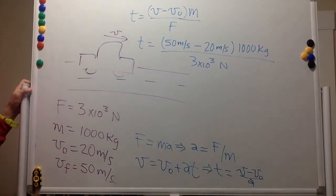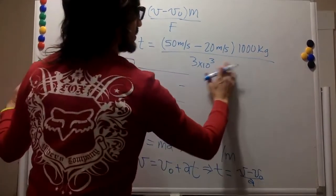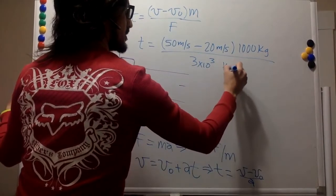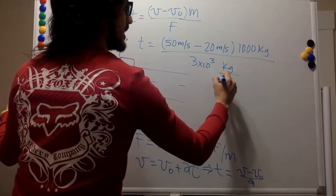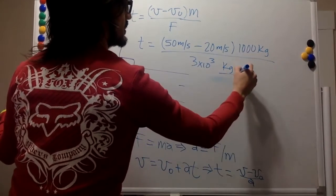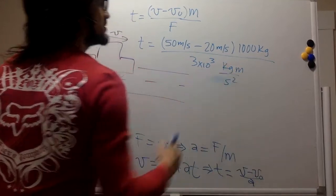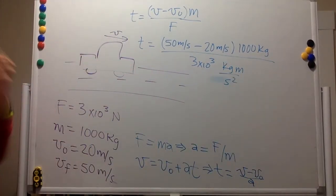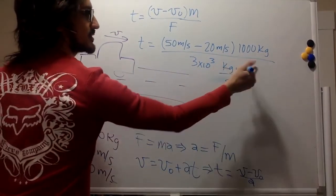And remember that a newton is kilogram multiplied by meter divided by second squared. So mass times acceleration.